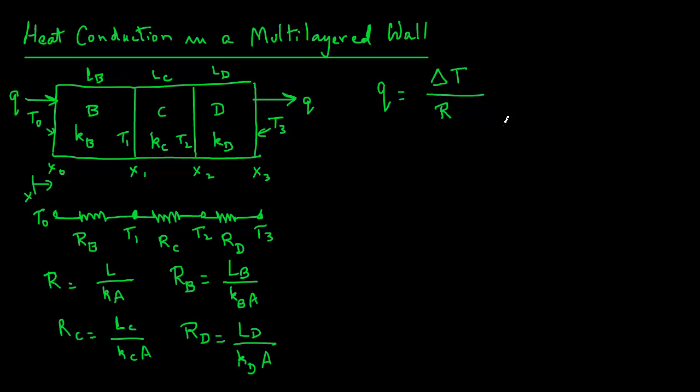So we can go ahead now and add all these thermal resistance values to get our total resistance. So the total resistance is LB over KBA plus LC over KCA plus LD over KDA. And we can go ahead and substitute that in our equation here.